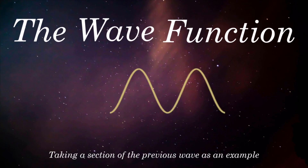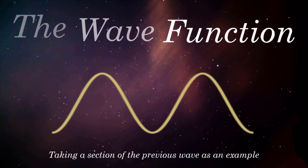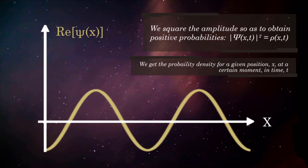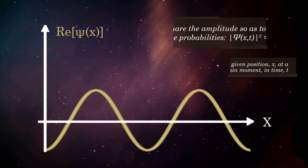And so, despite our ignorance, physicists came up with a way for us to determine a particle's location and some other of its wave-behaving properties. They called it the wave function, still at the core of quantum mechanics today. And this is how you get the probability of finding a particle at a given position.